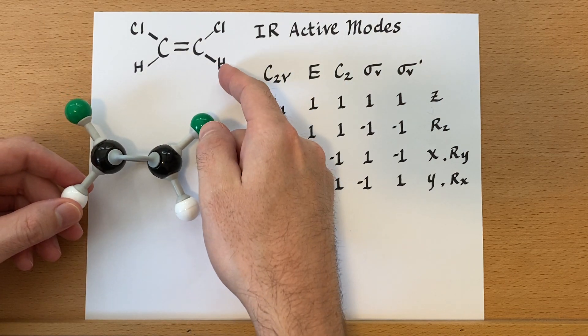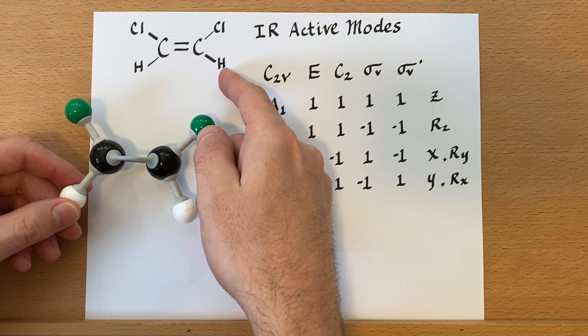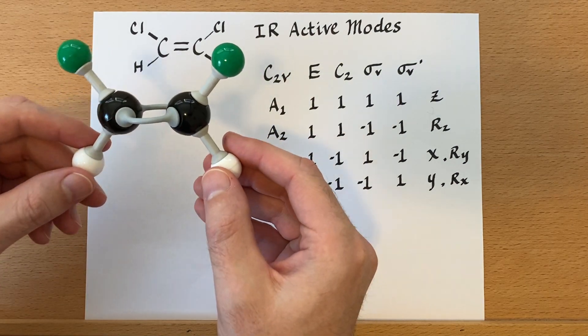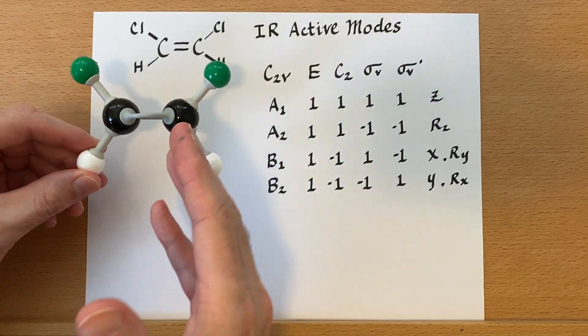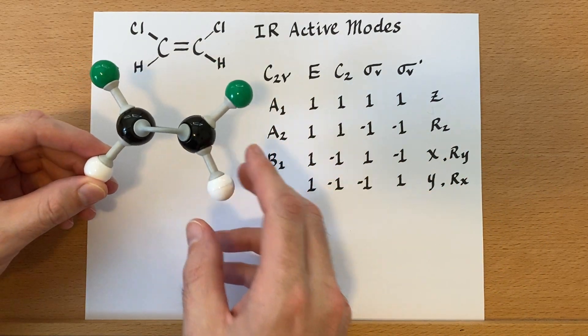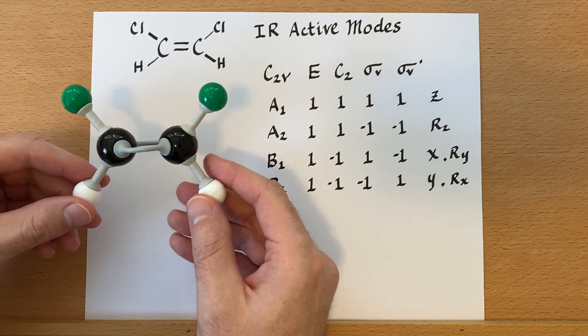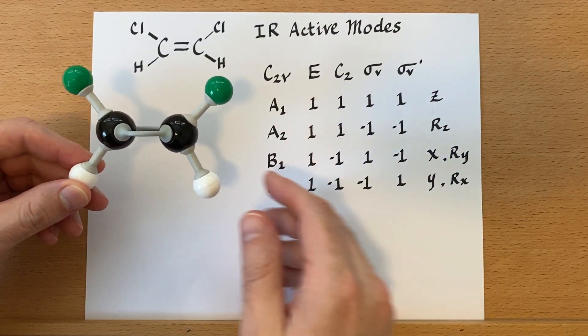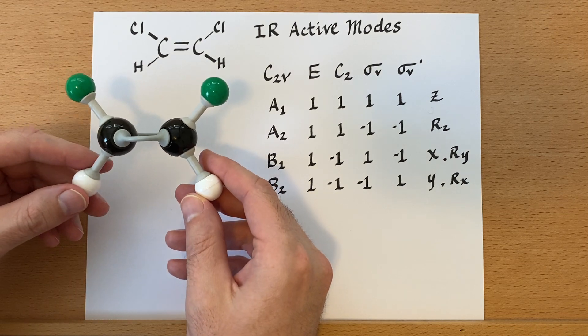So here's the cis-1,2-dichloroethene molecule, and I've made a model of this. Now, this point group is C2V. The symmetry of this one is a little different, and so let's look at how we determined the symmetry of this point group.